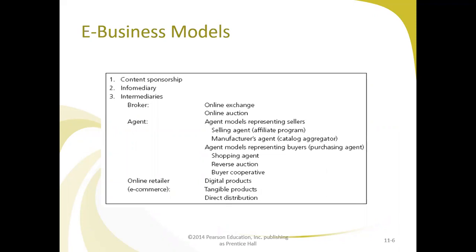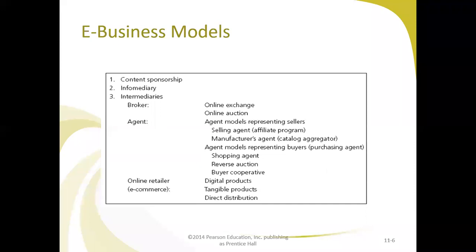In the e-business model, we look at content sponsorship, infomediaries, intermediaries, brokers, agents, and online retailers. Regarding content sponsorship: companies create websites that attract a large audience and sell advertising. This is how content works — they create content that attracts visitors to the website, which automatically creates sales for the companies.